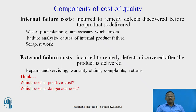The third is internal failure cost — costs incurred to remediate defects discovered before the product is delivered, on the production floor. This includes waste resulting from poor planning, unnecessary movement or work, errors caused in the process, failure analysis to identify causes of internal product failure, scrap which cannot be repaired, and rework where additional work is necessary to complete a product.